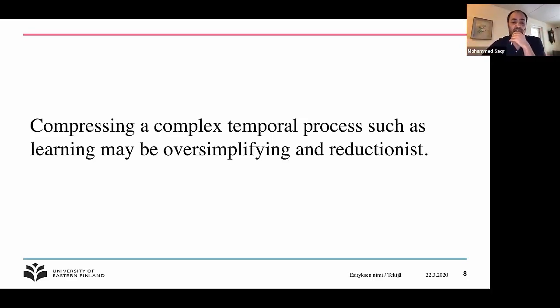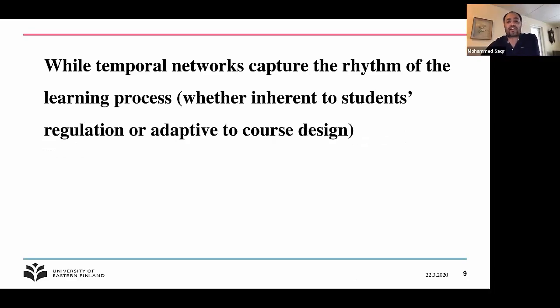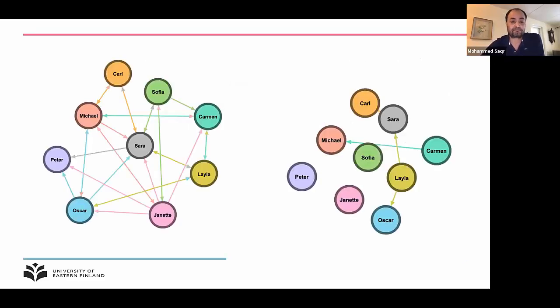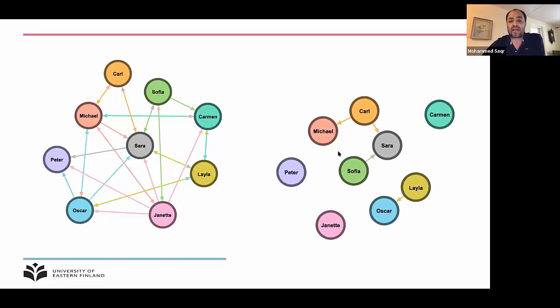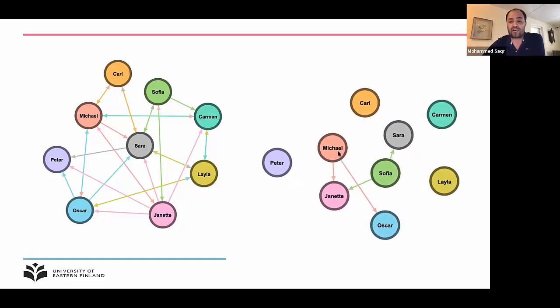While the temporal networks that we will use today capture the rhythm of the learning process, whether that rhythm is inherent to students' self-regulation of learning or adaptive to learning design. This is on the left side again, an aggregate network, and on the right side we see in real time what happens in a temporal network.